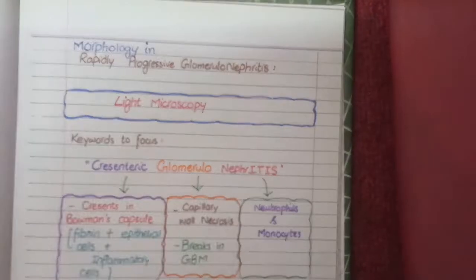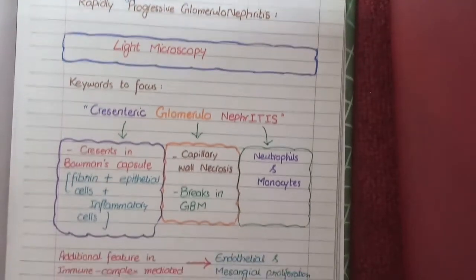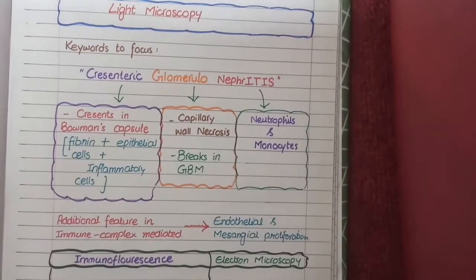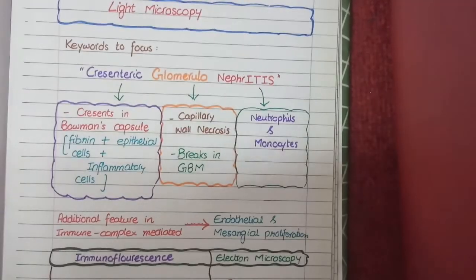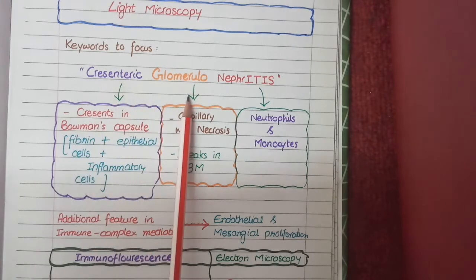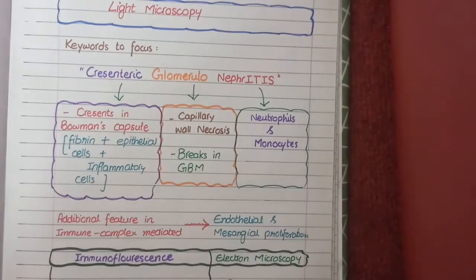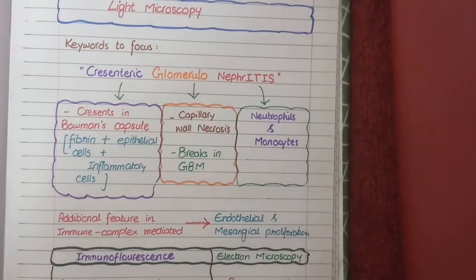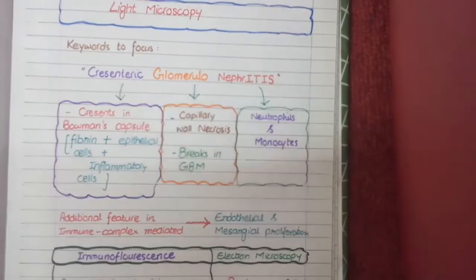Now let's come to the morphology of rapidly progressive glomerulonephritis, which we will discuss in three parts: first light microscopy, then electron microscopy, and at last immunofluorescence. For light microscopy, the keyword to remember is crescentic glomerulonephritis. This term is another official name for rapidly progressive glomerulonephritis, and focusing on this name will help you remember the light microscopic features.